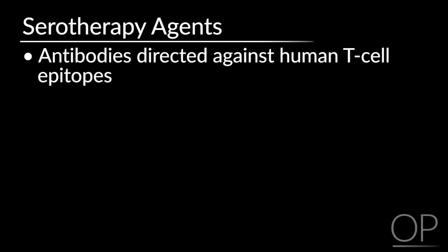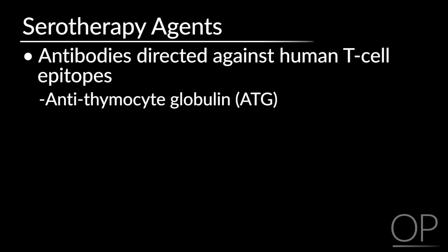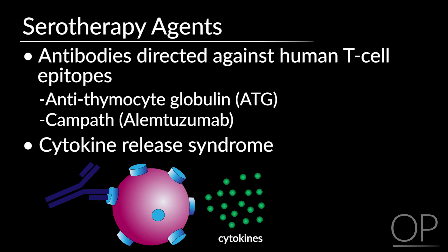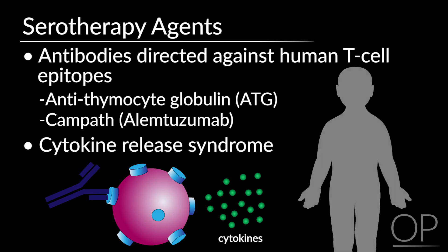Serotherapy agents are antibodies directed against human cellular epitopes. They include antithymocyte globulin, which comes in both horse and rabbit forms, and more commonly these days CAMPATH, the generic name is alemtuzumab — a monoclonal antibody against CD52 found on mature lymphocytes, used in lymphocyte-depleting and often reduced-intensity conditioning regimens. Both of these agents can cause cytokine release syndrome. The antibodies actually activate the T cells they are binding before those cells are destroyed, and the cytokines released produce a systemic inflammatory response very similar to severe infection, characterized by hypotension, fevers, and rigors.